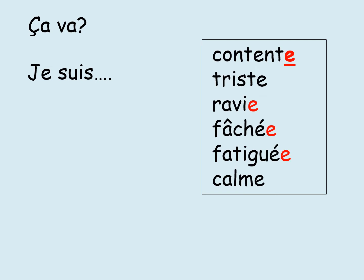Let's have a look at those emotions in a sentence now, just a simple one. So if I ask you the question ça va — how are you — your possible answers could be je suis, I am, and then one of the emotions. So je suis content or contente if you're a girl, je suis triste, ravi, fâché, fatigué, calme, etc.